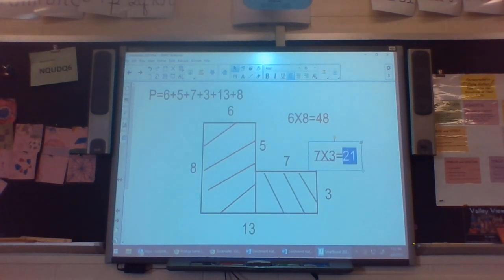So my green rectangle is 21 square inches. So I have to add those two numbers together. 48 plus 21 equals, looks like it's 69 to me. And my answer would be square inches. So 69 square inches would be the area of that shape.